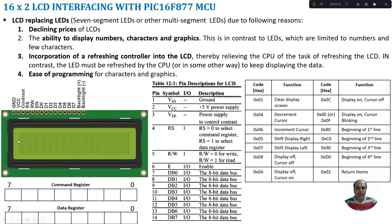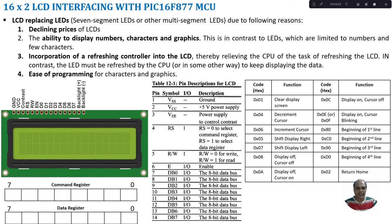Whereas the character to be printed — for example, H-E-L-L-O — for each character the corresponding ASCII value needs to be sent by the CPU. That ASCII value will go to the data register. So the data register contains the character to be printed on the LCD. The command register holds the command like which row, which position, whether cursor is required, whether to clear the buffer. The ASCII value of the character resides in the data register.